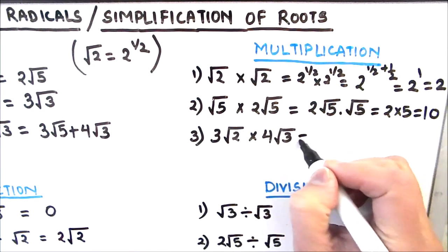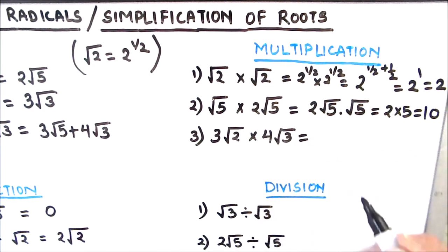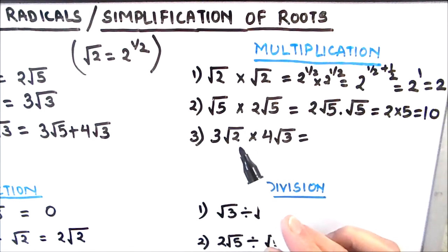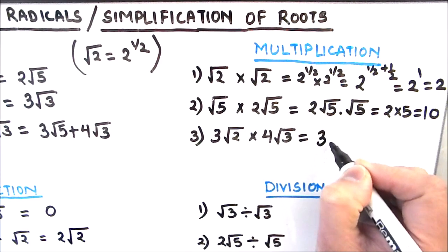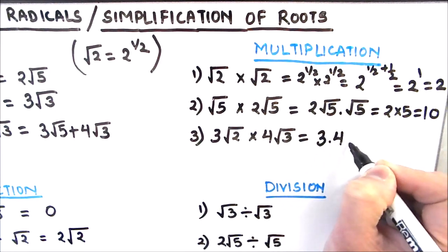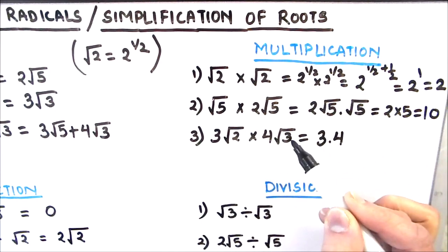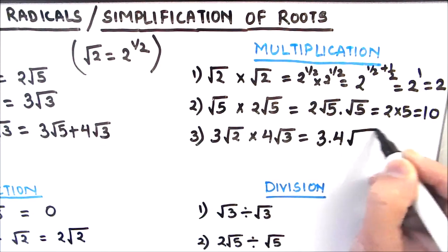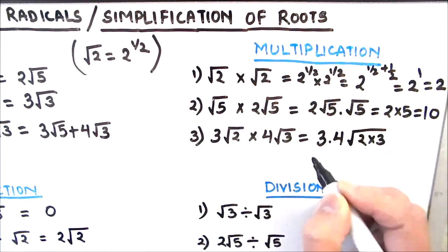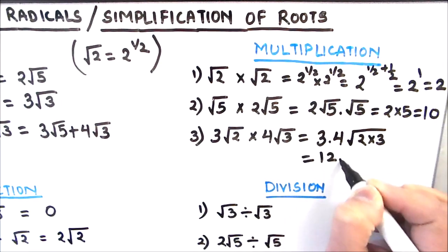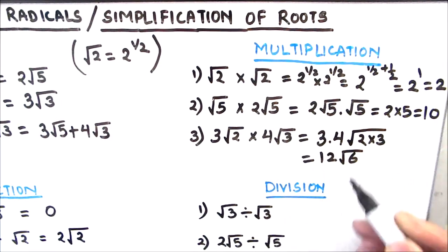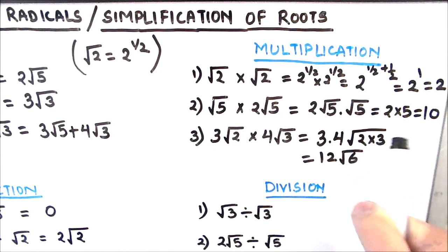The next example is 3 root 2 times 4 root 3. In multiplication, the numbers outside the root get multiplied together and the numbers inside the root get multiplied together. So this is 3 times 4, with root 2 times 3 inside. The answer is 12 root 6, since 3 times 4 is 12 and 2 times 3 is 6.